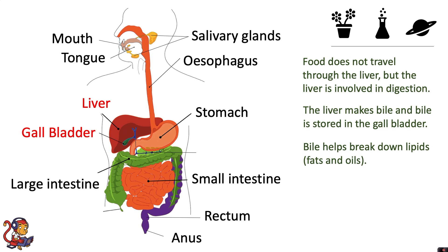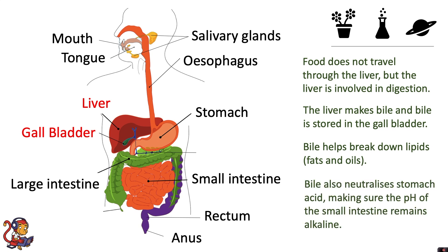Bile helps break down lipids and bile also neutralizes stomach acid, making sure the pH of the small intestine remains alkaline. The gallbladder is where the bile is stored, and the bile will travel down and be injected at the top of the small intestine where the stomach meets the small intestine.